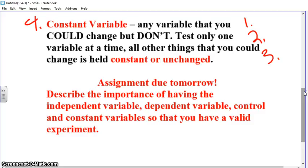So tomorrow I want you to describe the importance of having an independent variable. Why is that important? Okay. Don't say it right now. Okay. Dependent variable. Why do we have to have that in an experiment? Why is it important to have a control? Why? Okay. In constants. Why are all four of these ingredients so important in a science fair or in an experiment period? Okay. So why do we need those? Describe those.